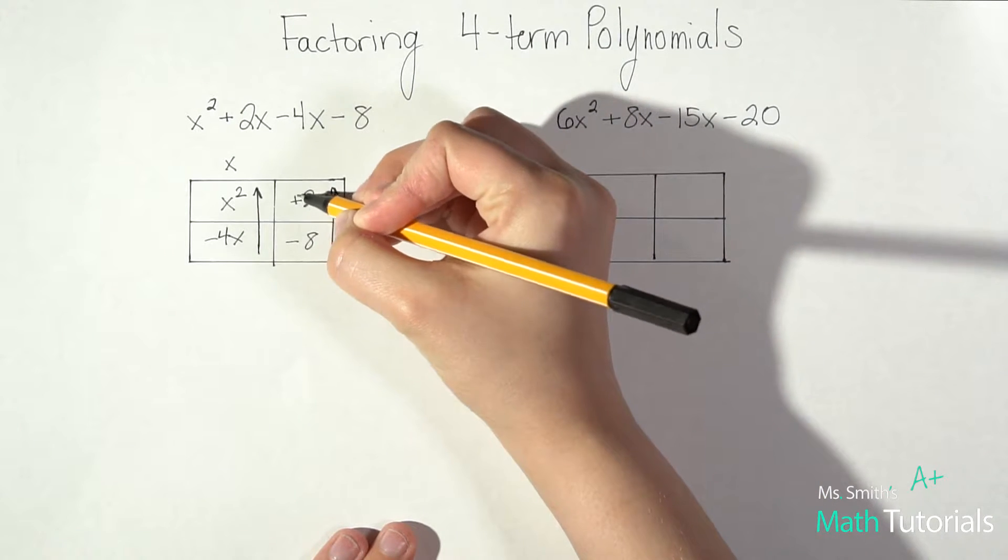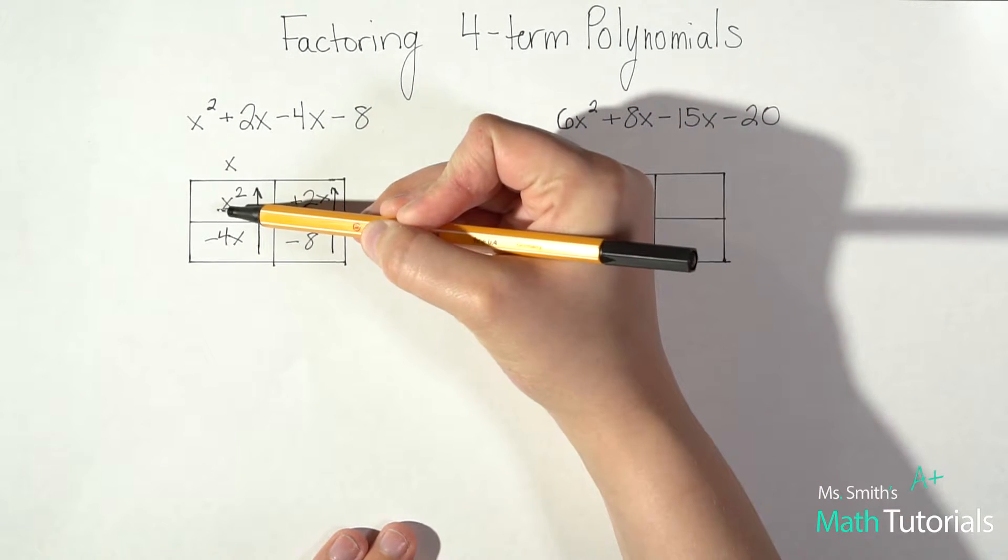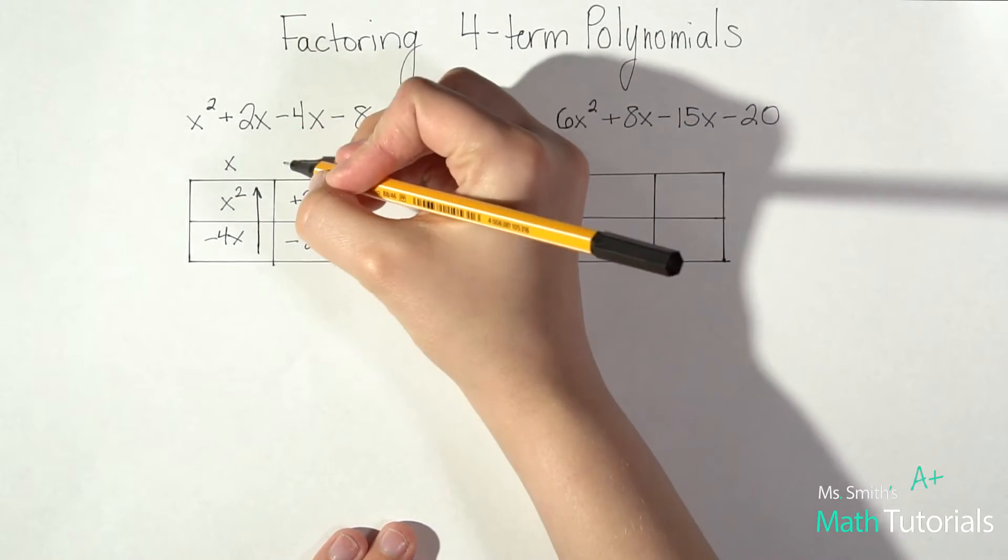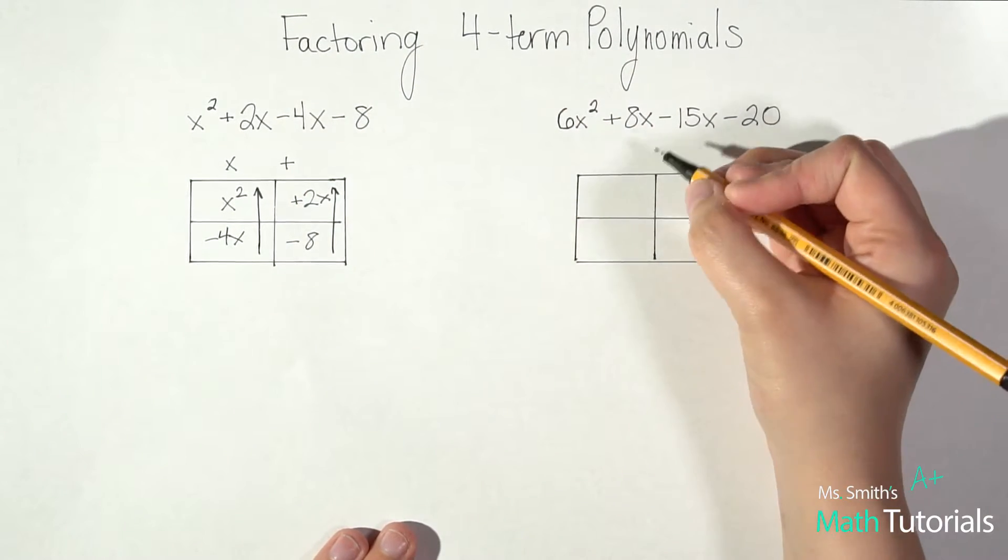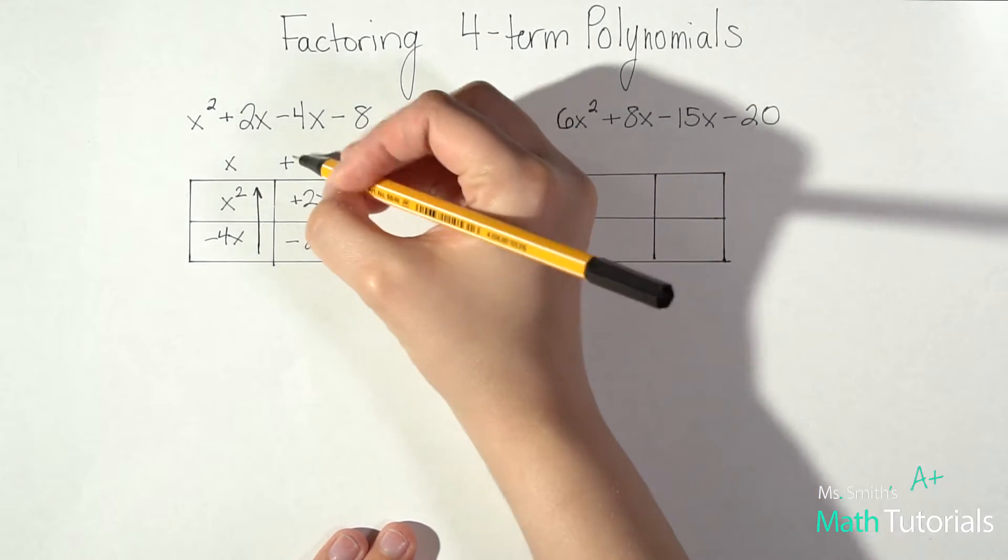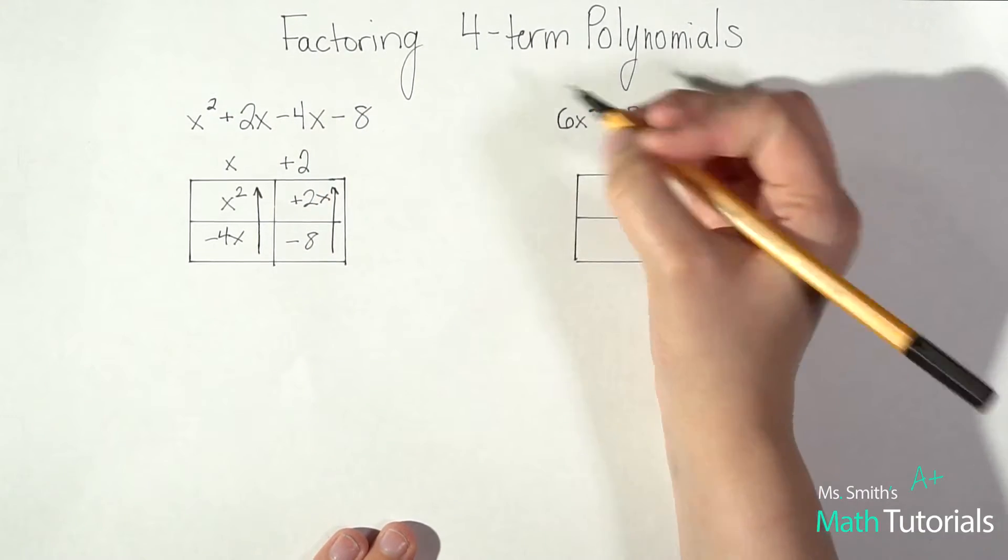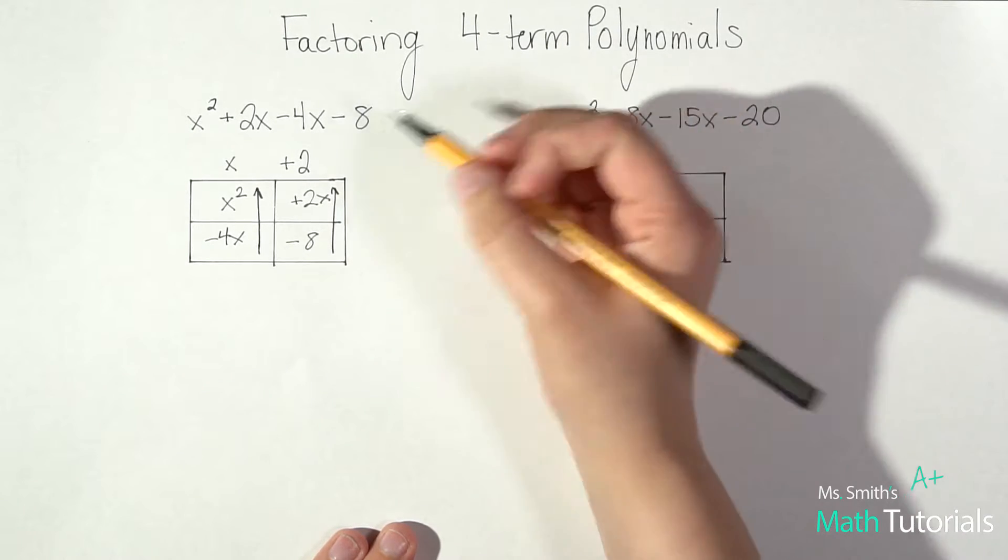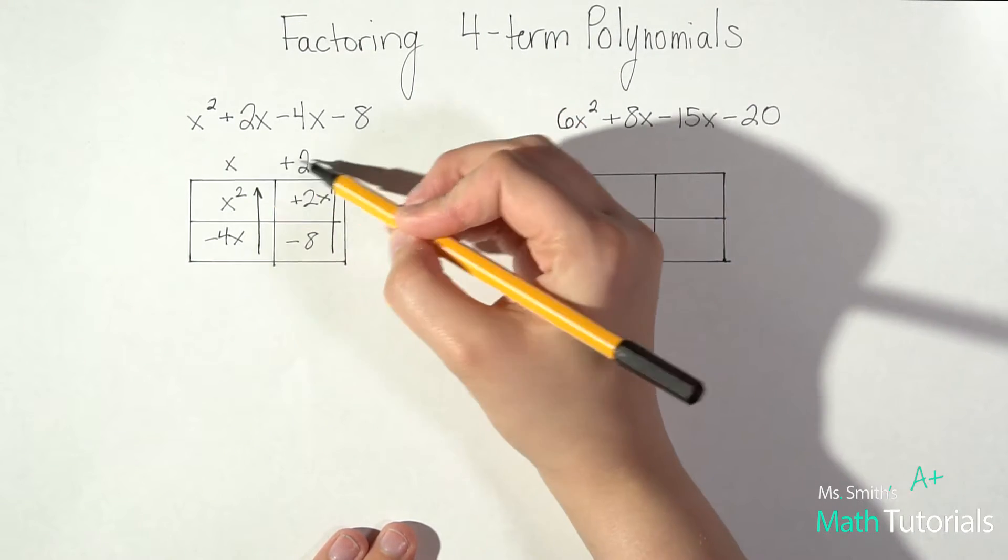We always factor out this leading sign. So here it was positive so we brought out the positive. Here it's positive so we're going to bring out positive. So with 8 and 2 we said it'd be 2. I can't bring an x out because even though that one has one, that one doesn't. So it's just going to be x plus 2 on the top.